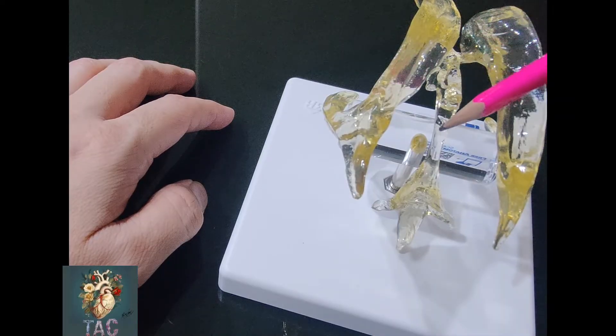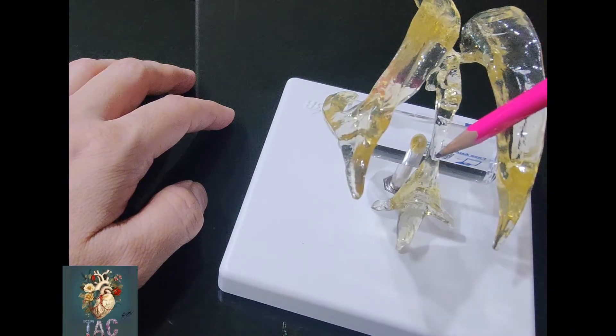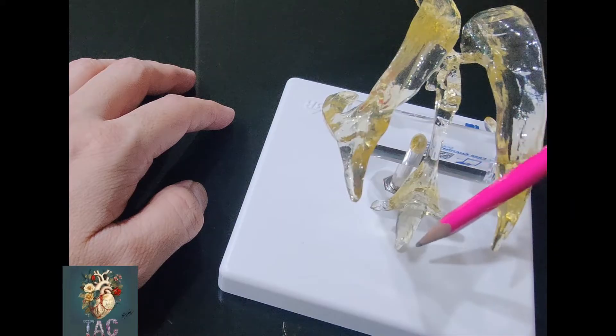This is the area of the third ventricle which continues downward as the aqueduct of Sylvius and then becomes rhomboid shaped.